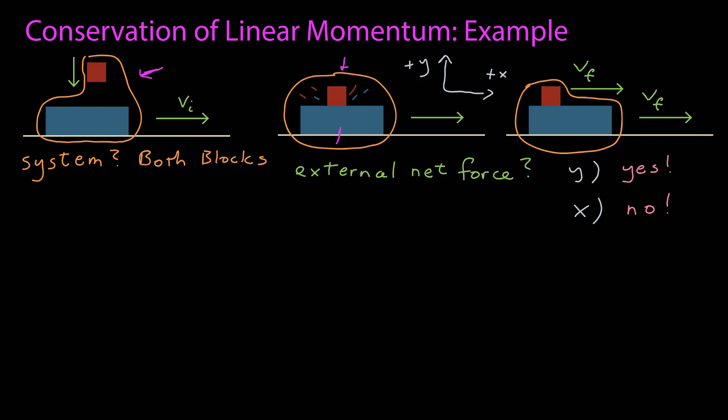I'm going to choose two points in time, and the first point will be here, and the second point here, where they're going at the same speed. So initially, what is the total momentum in the x-direction? Well, that's just the momentum of the blue block, would be the mass of blue times the velocity of blue, and it's in the positive x-direction.